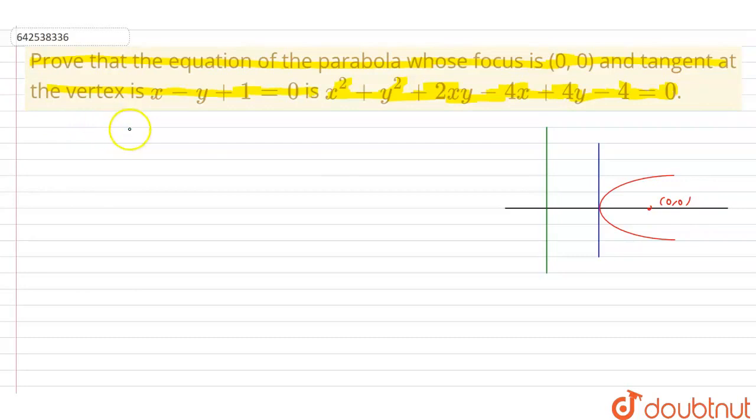Now, the equation of tangent at vertex is y = x + 1, so its slope is equal to 1. If we find the normal to this tangent at vertex, we know that it will basically become the axis of the parabola. It will pass through the focus (0,0) and will be perpendicular to the tangent at vertex, so its slope will be equal to -1.